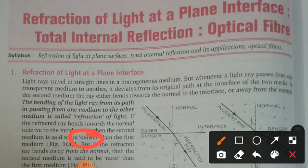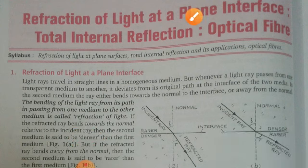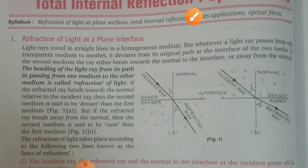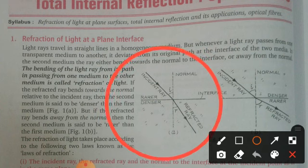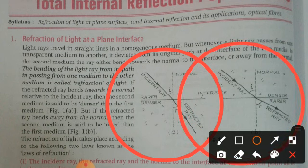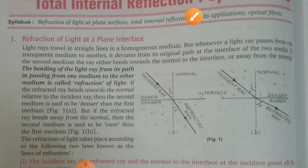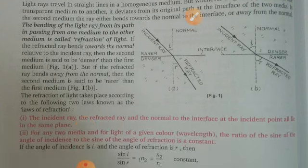If the refracted ray bends towards the normal relative to the incident ray, the second medium is said to be denser medium. The light coming from air is known as incident light, and the point where it is incident is the point of incidence. If the refracted ray bends away from the normal, then the second medium is said to be rarer medium.